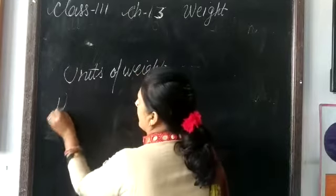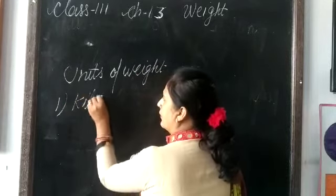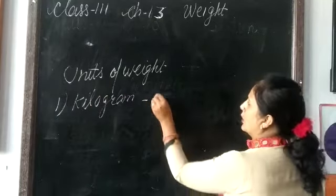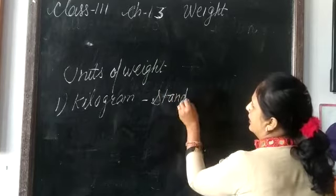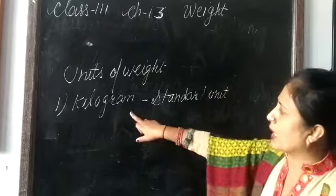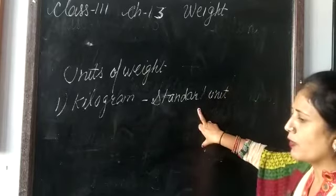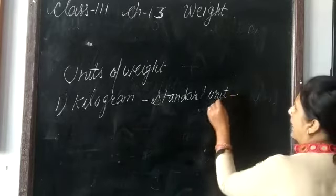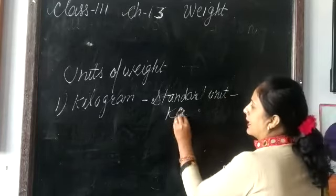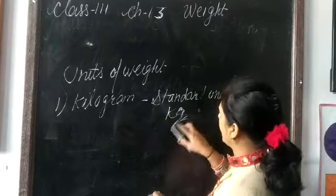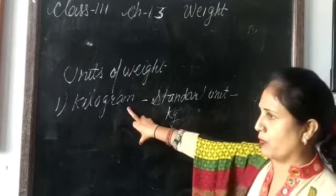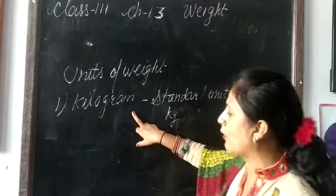First: kilogram. Kilogram is the standard unit of weight and is denoted by kg. Kilogram is the bigger unit of weight.